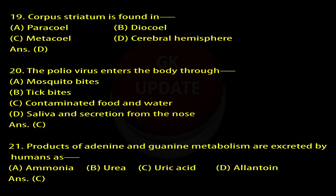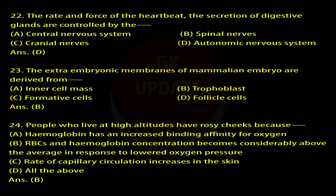Question 21: Products of adenine and guanine metabolism are excreted by humans as — A. Ammonia, B. Urea, C. Uric acid, D. Allantoin. Answer: C.